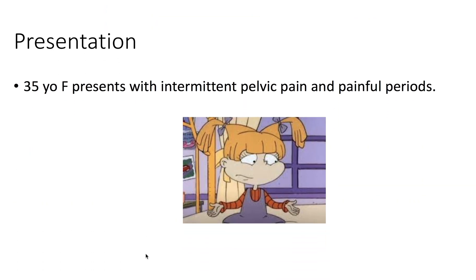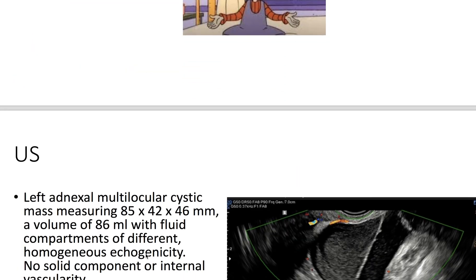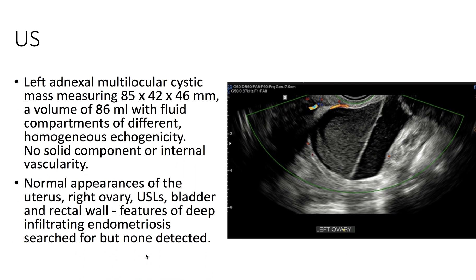Presentation: we have a 35-year-old female presenting with intermittent pelvic pain and painful periods. On ultrasound, we see a left adnexal multilocular cystic mass.